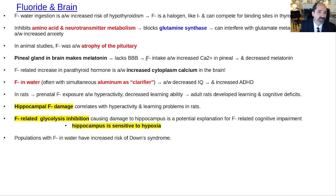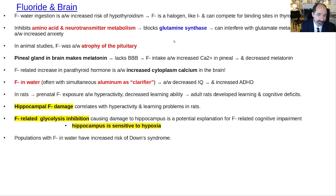F-minus water ingestion is associated with increased risk of hypothyroidism. F-minus is also a halogen and can sometimes substitute for iodine in the thyroid. It can also interfere with amino acid and neurotransmitter metabolism — blocking glutamine synthase, which can interfere with the whole glutamate neurotransmitter system. In animal studies, it was associated with increased atrophy of the pituitary and increased calcification of the pineal gland — the location for making melatonin — leading to decreased melatonin and decreased ability to sleep. F-minus causing secondary hyperparathyroidism elevates parathyroid hormone, leading to increased cytoplasmic calcium in brain cells, contributing to excitotoxicity.